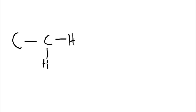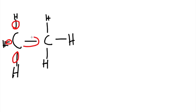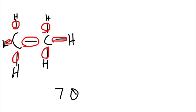For example, if we have this structure, all we do is count the bonds. So a single bond: one, two, three, four, five, six. In total here we have seven Sigma bonds. We don't have any double bond or triple bond, so there are no Pi bonds for this structure.